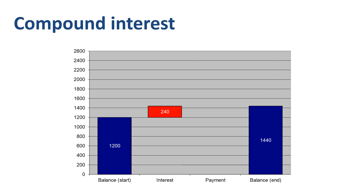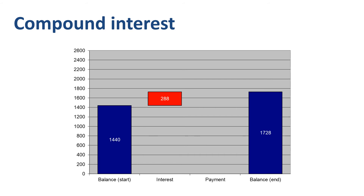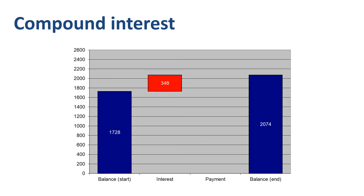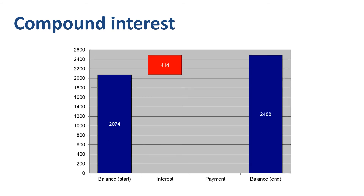You start year 2 with $1200 in debt, and now get charged 20% interest on $1200, which is $240. $200 of this is interest on the original outstanding balance of $1000; the other $40 is interest on interest. Your outstanding balance is now $1440. Add 20% interest on that, and then 20% on that, and then 20% on that. You now have an outstanding balance after 5 years of $2488.